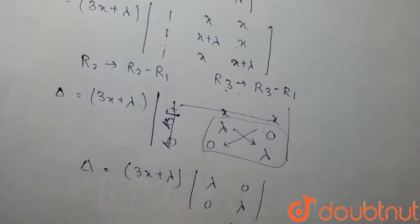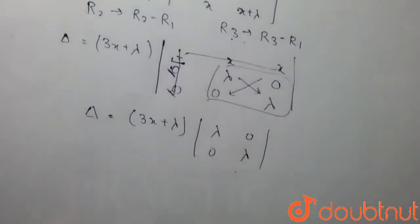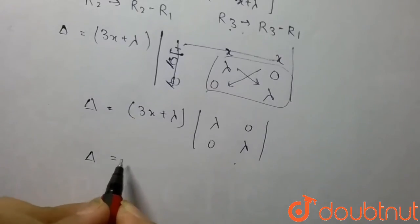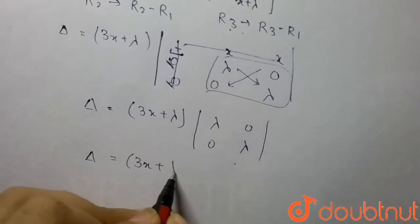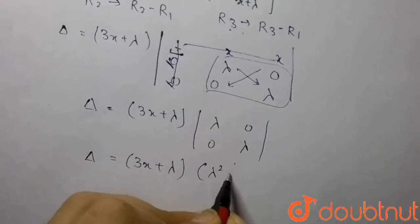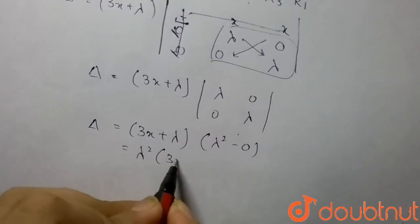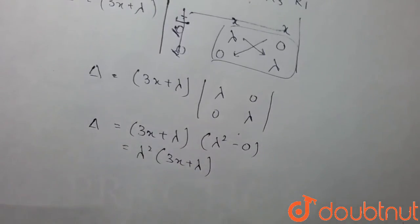We can expand it. So Δ equals 3x+λ times (λ² - 0), which equals λ²(3x+λ). So this is our final answer. Thank you.